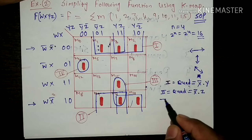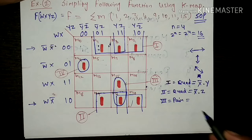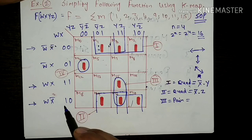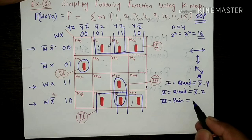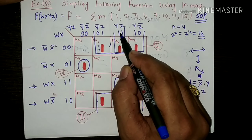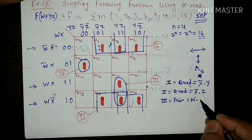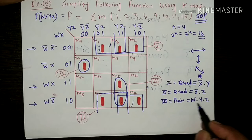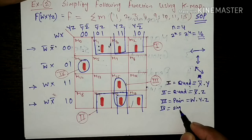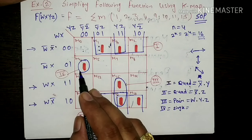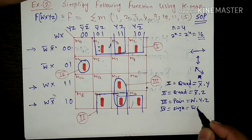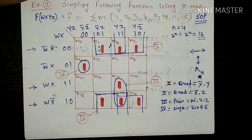Now the third group, that is a pair. इस pair में, you can see, there are two rows - third and fourth - और इसमें जो common constant term है वो है W. So W dot - और इस pair में there is a single column, the third column, so single column की जो term है वो as it is आजाएगी, that is Y·Z. So W·Y·Z is the minimized term for the third group. And the fourth group is a single term - और जो single term की minterm है वो as it is आजाएगी, that is m4. m4 means 0,1,0,0 - that means W̄·X·Ȳ·Z̄.